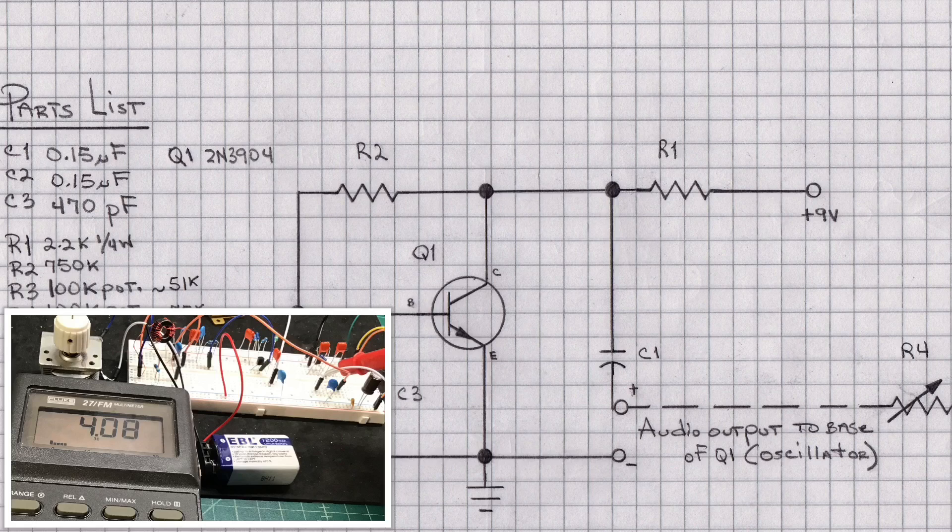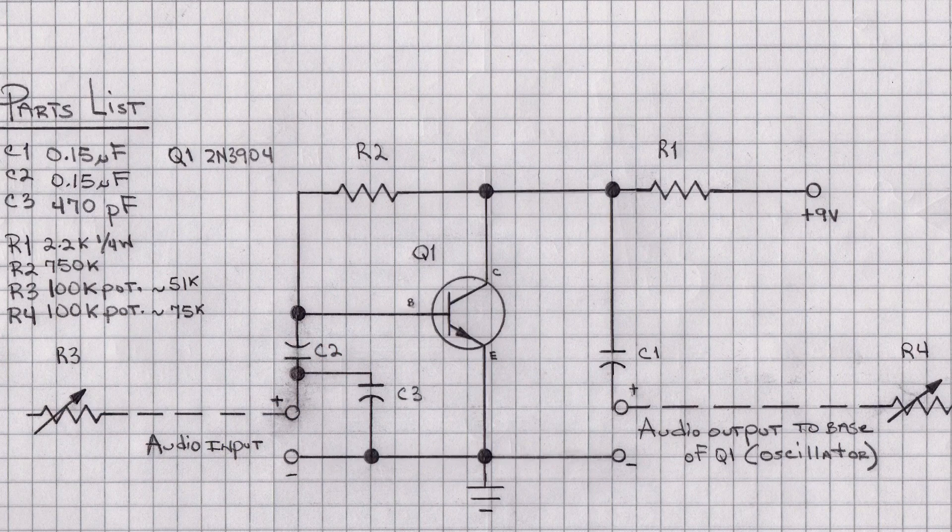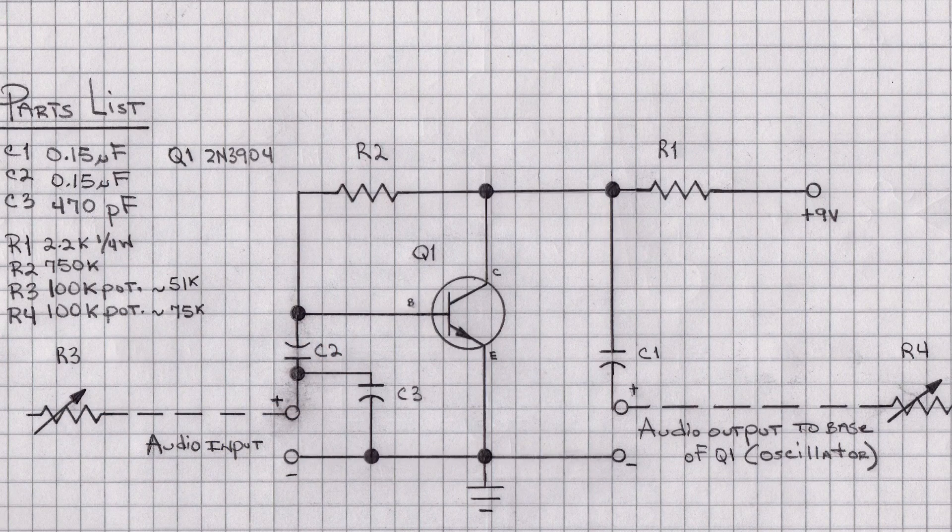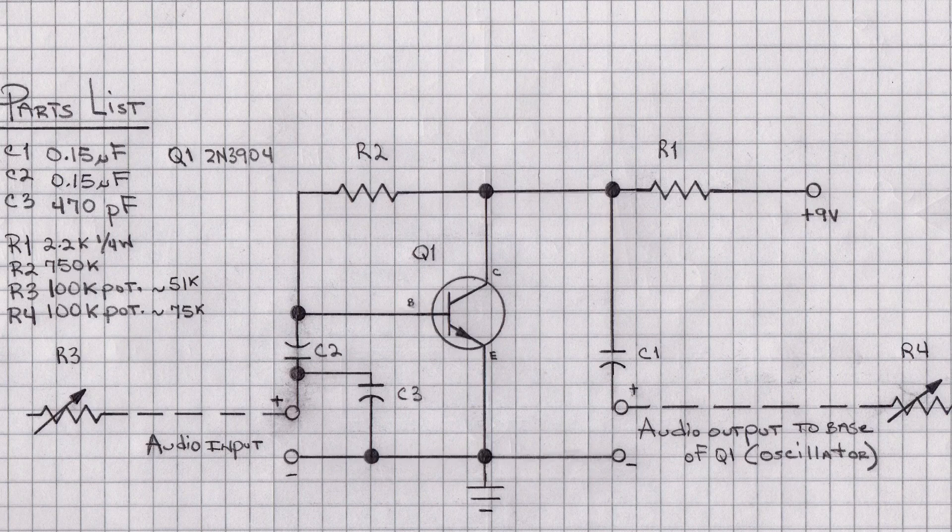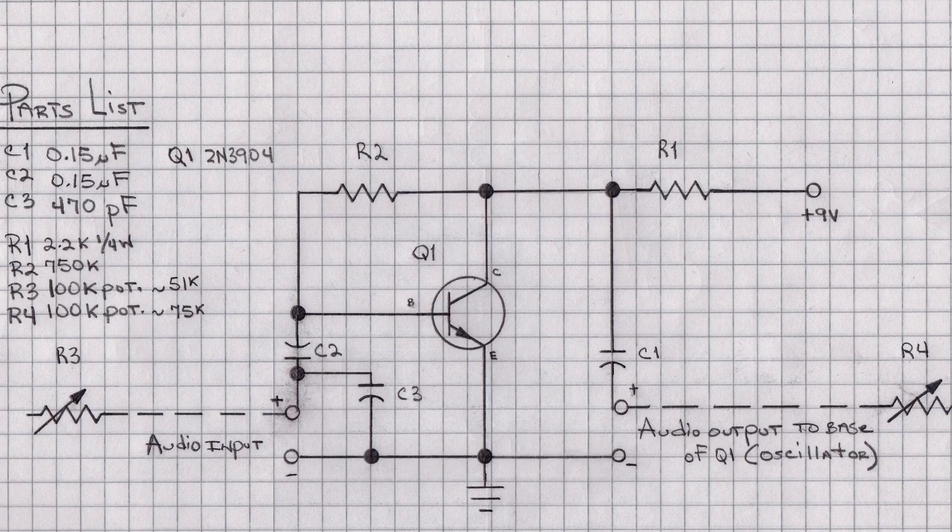So around four and a half volts or a little less at the collector itself by varying R2 in this case. And you can see for my design somewhere around 750K got me to that sweet spot.